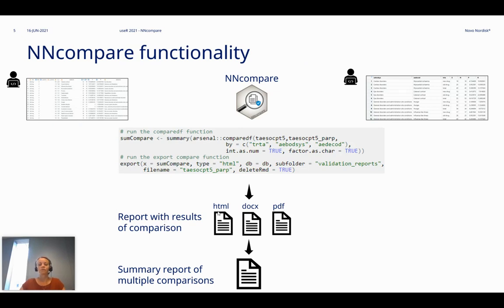The actual comparison of the two data frames is done with the compareDF function from the arsenal package. The two data frames do not have to be sorted in the same order if you specify the by argument with the key variables. The X function is then called on the summary object of the comparison, which creates a report with the results of the comparison. The report can be in various formats, and furthermore, a summary report is created summarizing all comparisons made within a given study.